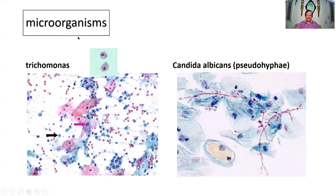Regarding microorganisms: the arrows here indicate Trichomonas vaginalis. At higher magnification they are somewhat pear-shaped, with a visible nucleus and flagella. The background shows inflammation. We identify them by their dirty background color, pear shape, nucleus, and flagella.